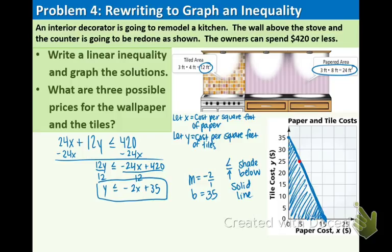So as you can see this is a point right here. $10 for wallpaper and $10 for the tiles. And lastly, $15 for the wallpaper and $5 for the tiles. So that also works.